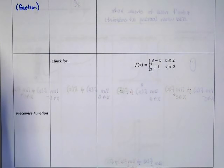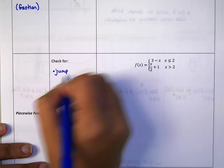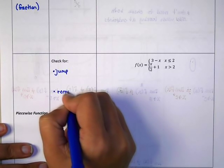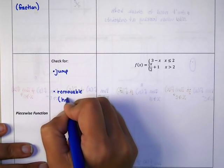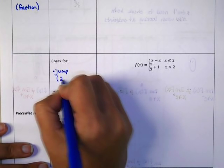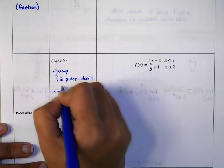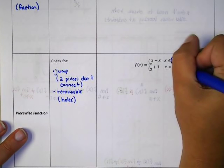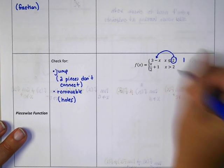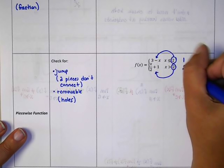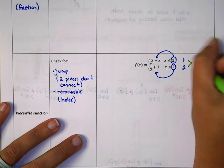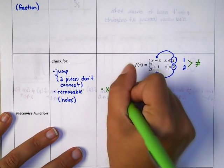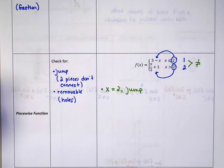For a piecewise function, you're going to check for jump discontinuities and removable or hole discontinuities — where the two pieces don't connect. My connection point is at X equals 2. If I plug 2 into the top function I get 1, and into the bottom function I get 2. Because I get two different Y values that are not equal, I have a jump discontinuity at X equals 2 — one side connects to Y equals 1 and the other to Y equals 2.